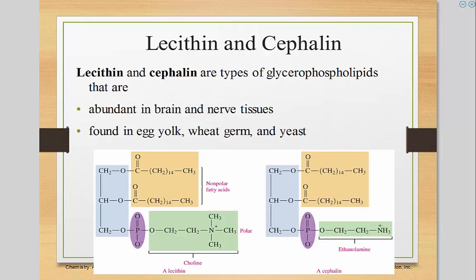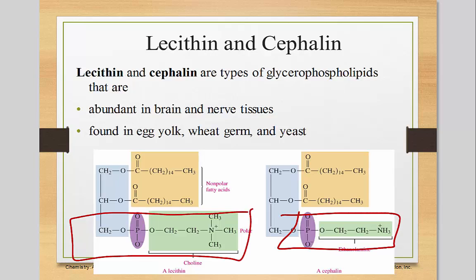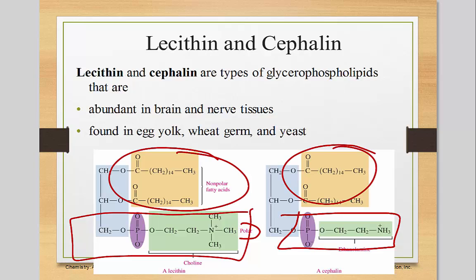Here are two of those glycerophospholipids. They are abundant in the brain and nerve tissues and found in egg yolk, wheat germ, and yeast. Here is that all-important phosphate complex — that's what gives it its polar capabilities. The rest of this is nonpolar, just like the glycerophospholipids we talked about earlier.